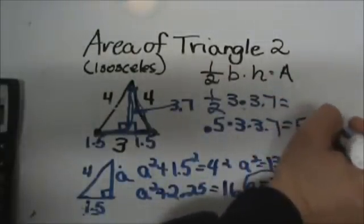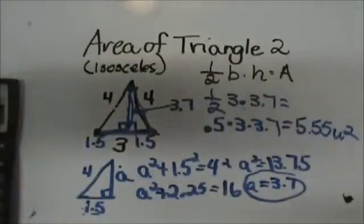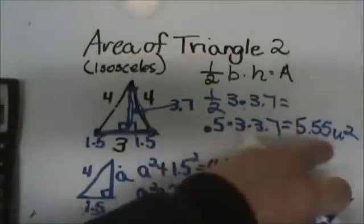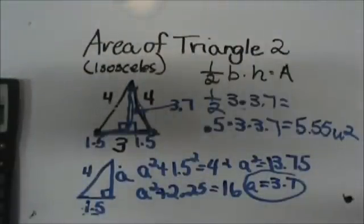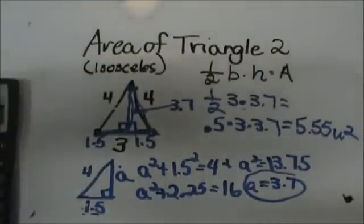So if it is inches it is square inches, if it is meters it is square meters, or if it is centimeters it is square centimeters. And that is how you find the area of an isosceles triangle.